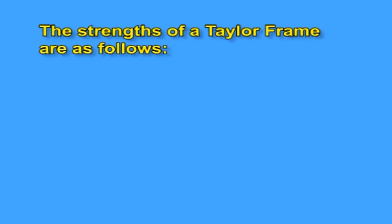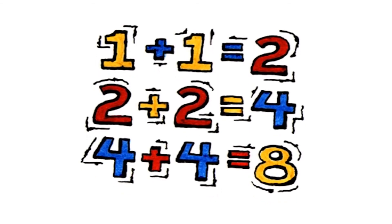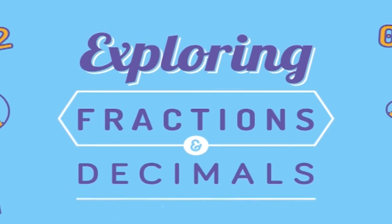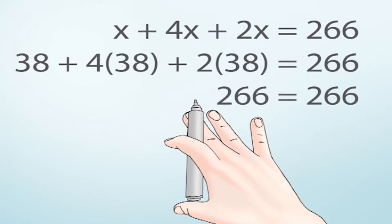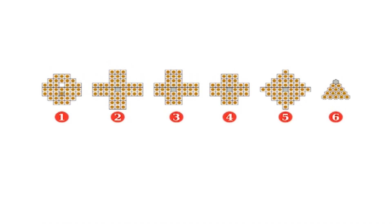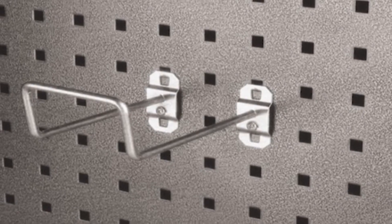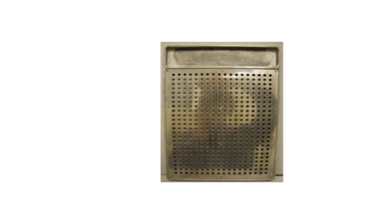The strengths of the Taylor frame are: steps can be displayed and each step is visible. It has the ability to solve addition, subtraction, multiplication, and division problems, as well as problems involving fractions, decimals, percentages, square roots, and various brackets in simplification methods. It can also solve algebraic problems. The pegs have different shapes for easy identification of notations. Since it is like a pegboard, geometrical and graphical shapes can be framed. Rough work can be done similar to the sighted method.